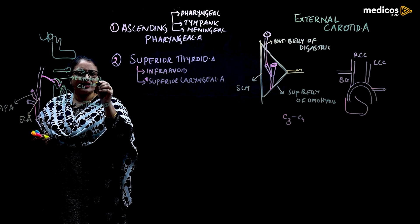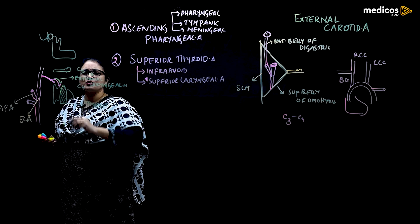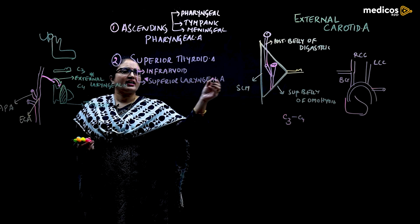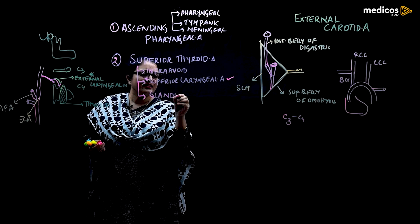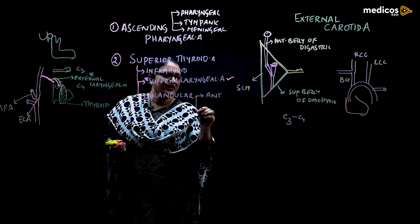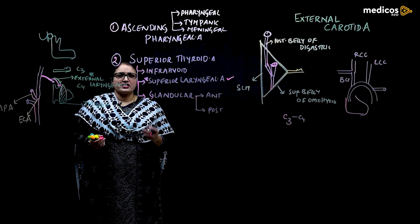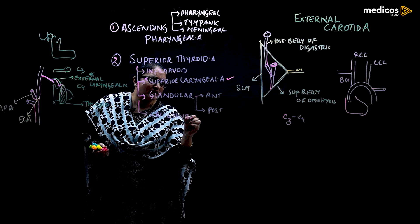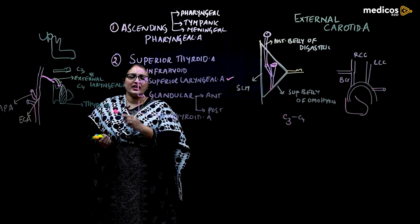During thyroid surgeries, when the superior thyroid artery has to be ligated — that is, the blood supply has to be cut short — it is important that the external laryngeal nerve and the superior laryngeal artery be ligated properly and separated very close to the thyroid. The branches are: infrahyoid, superior laryngeal artery, then glandular branches to the thyroid divided into anterior and posterior branches, and a cricothyroid branch. The superior thyroid artery's major quota is supplying the larynx and the thyroid gland.